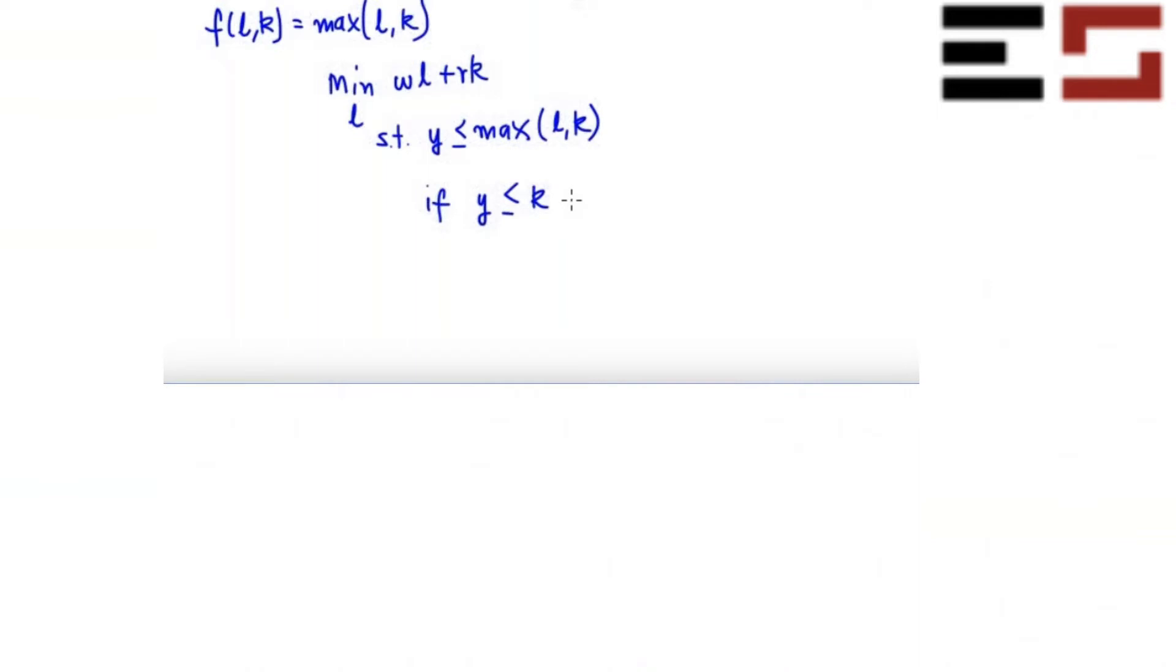Okay, so this is a production function that you have at your disposal. This is the cost, this is your capital, this is the output you want to produce, less than K.